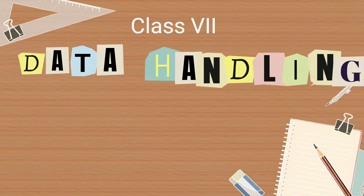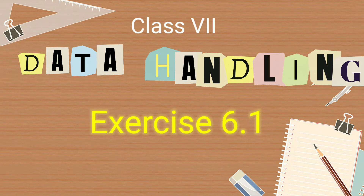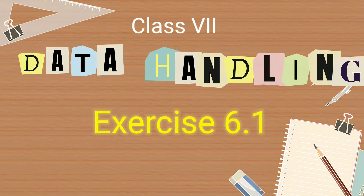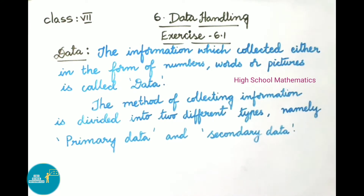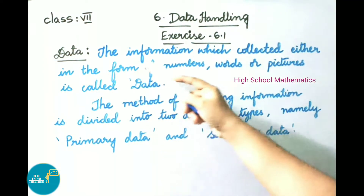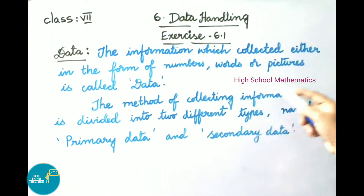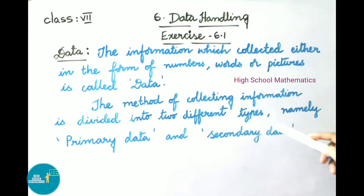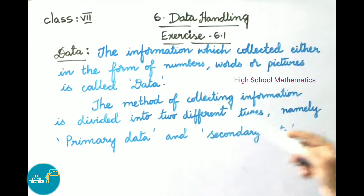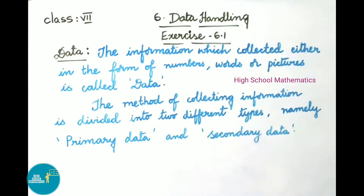Hello everyone, welcome to the high school mathematics channel. Today we are going to learn Class 7 Chapter 6: Data Handling, Exercise 6.1. Before going to the exercise, let us see some definitions and examples. The information collected either in the form of numbers, words, or pictures is called data. The method of collecting information is divided into two different types: primary data and secondary data.